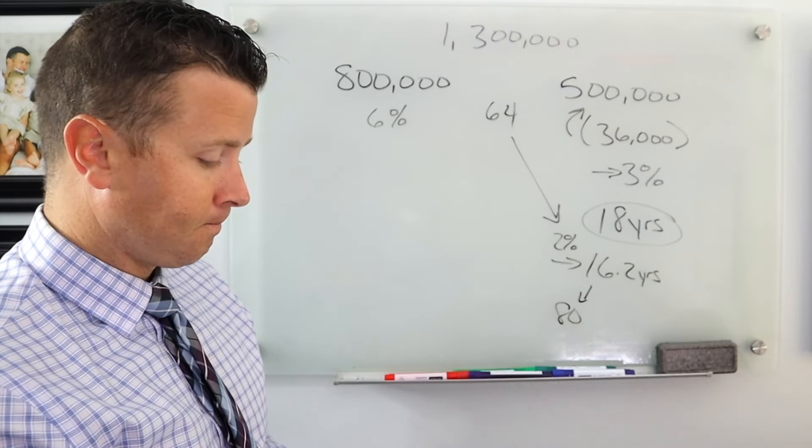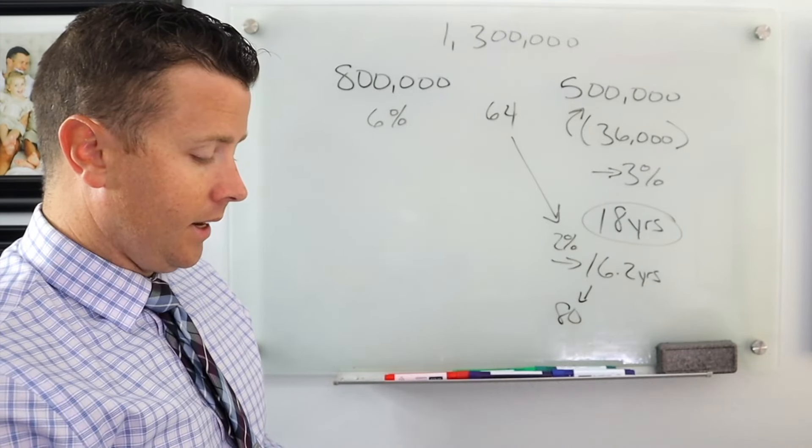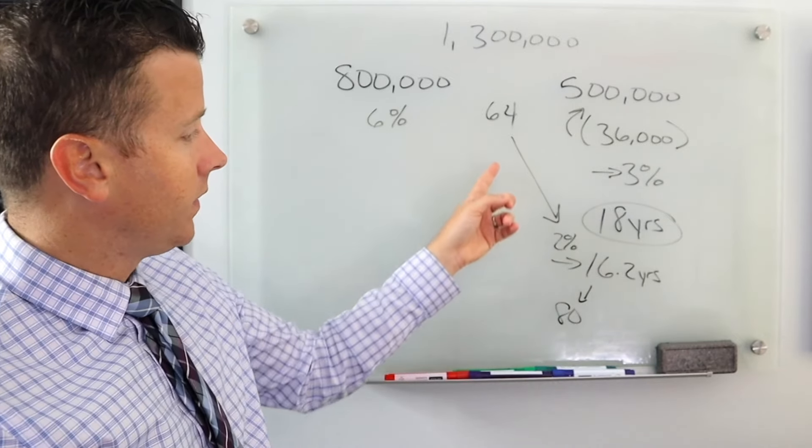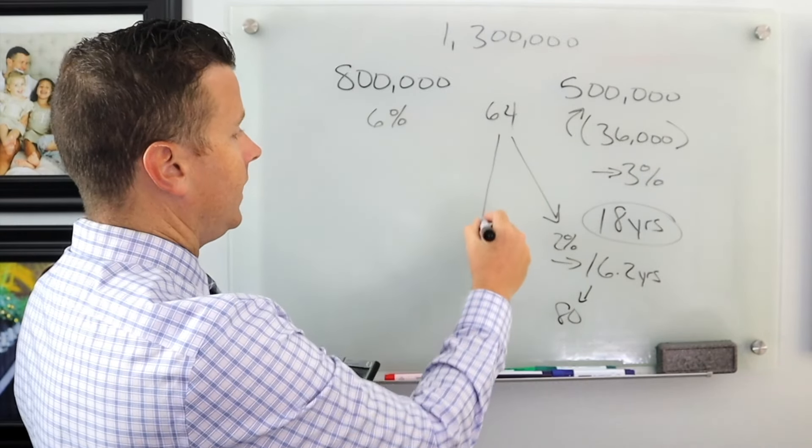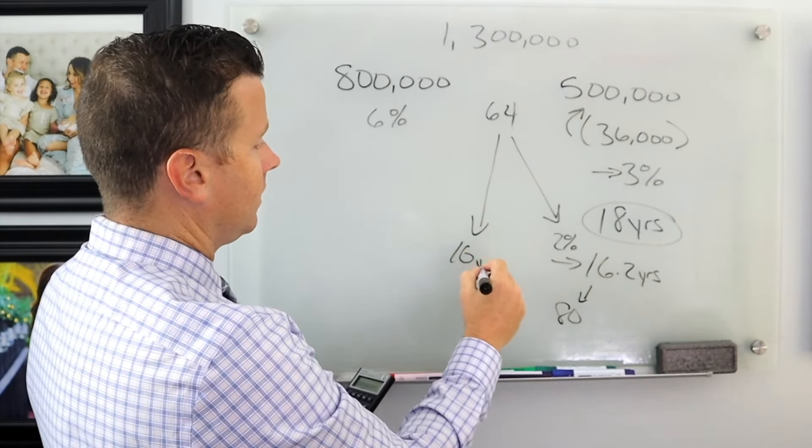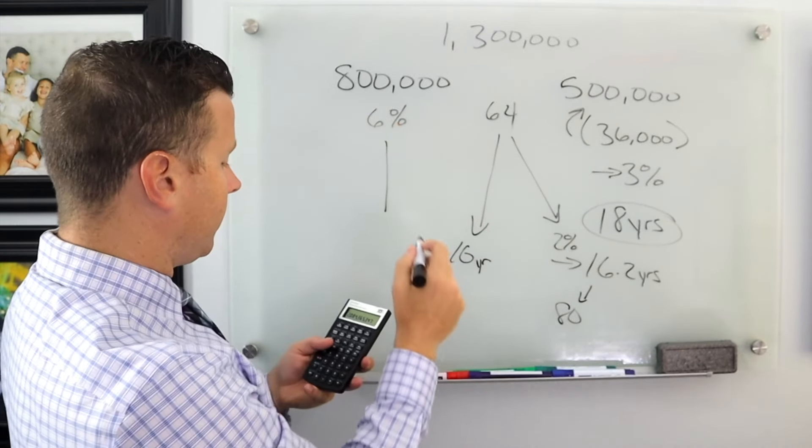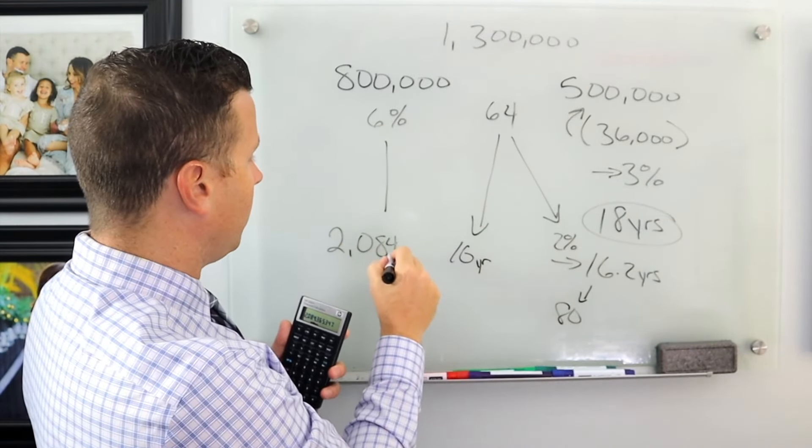So 6%. And at the end of 16 years, earning 6%, that $800,000 grows to $2,084,000.